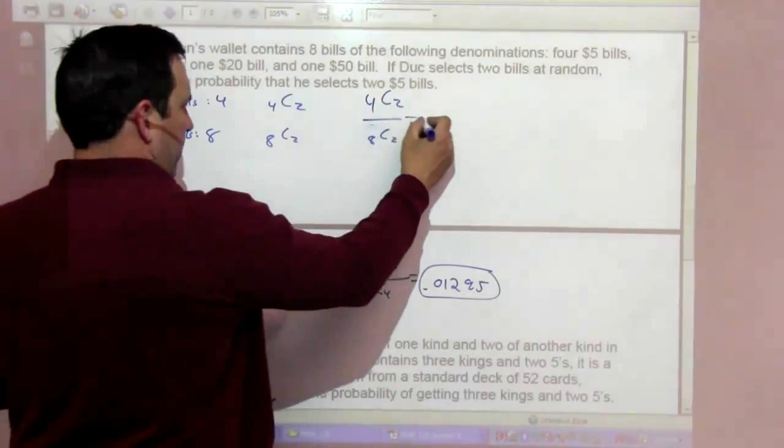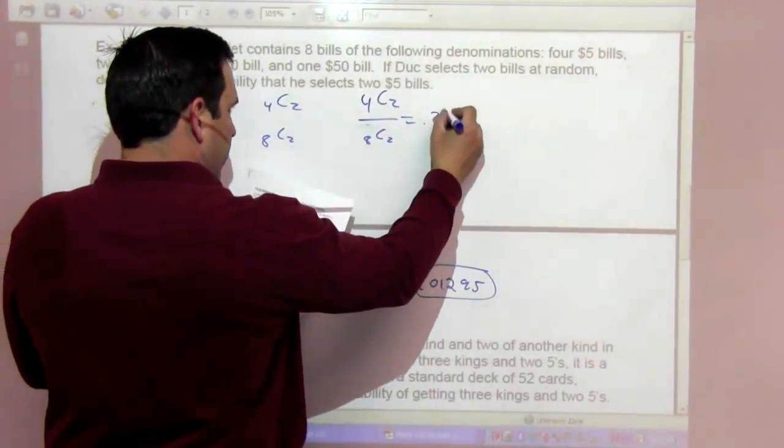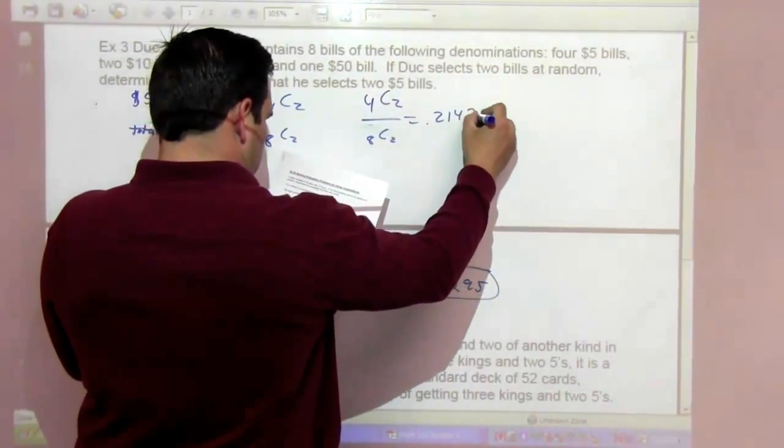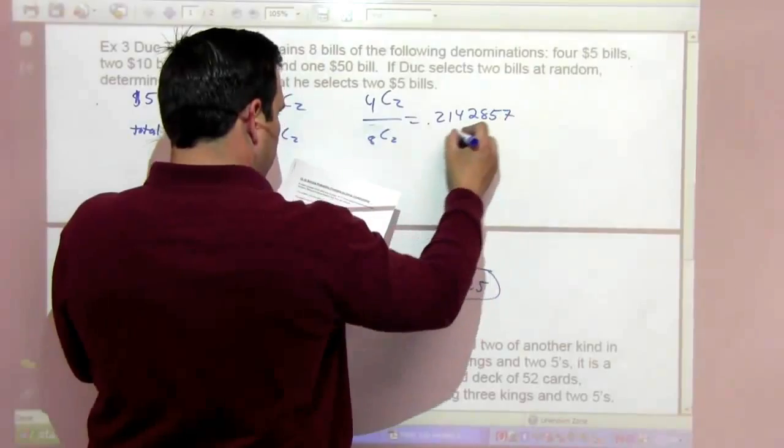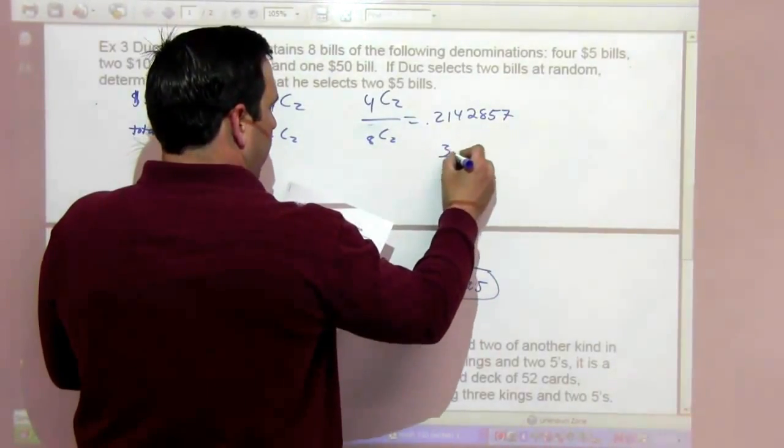So it's going to be 4 choose 2 over 8 choose 2. And that's going to be 0.214286 or 3/14.